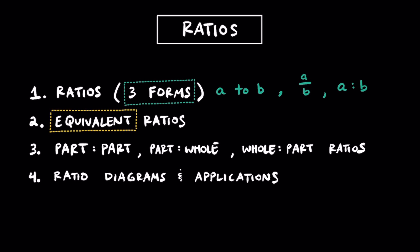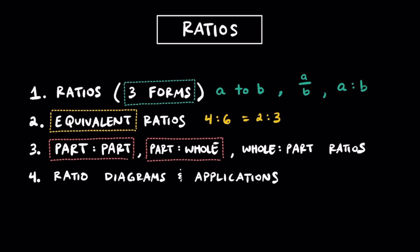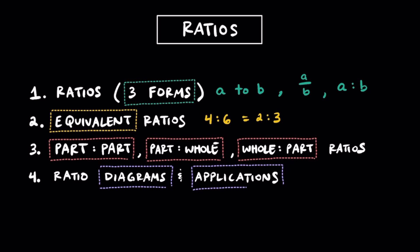For example, we could have an equivalent ratio like 4 to 6, which is equivalent to 2 to 3. I'll also cover different types of ratios like part to part, part to whole, and whole to part. And to help you see and understand ratios more clearly, I'll go over some diagrams and some application questions as well.